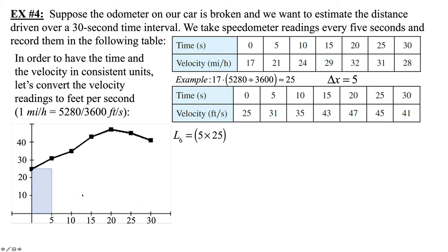Then we're going to do our next rectangle. Upper left-hand corner at 5 gives me 31. Then plus 5 times 35, plus 5 times 43, plus 5 times 47, plus 5 times 45. Notice we're not using the very last entry here. We have 7 possible values here, but we only have 6 rectangles.